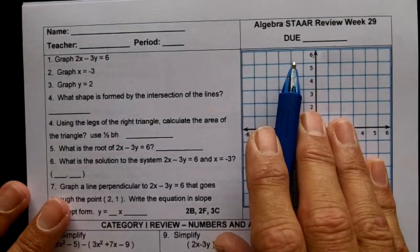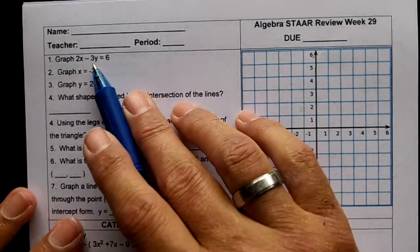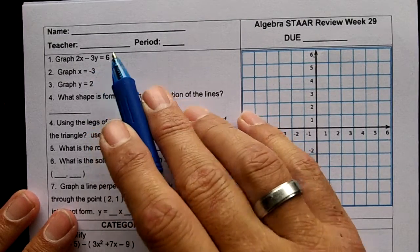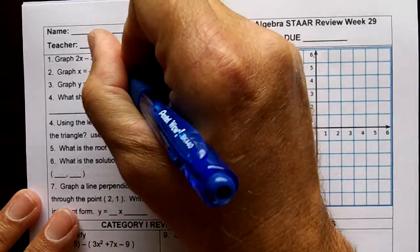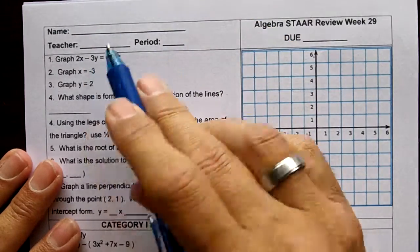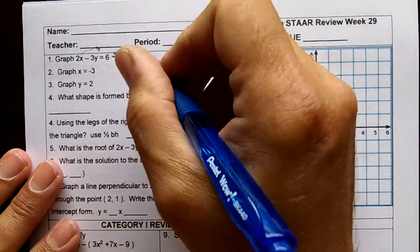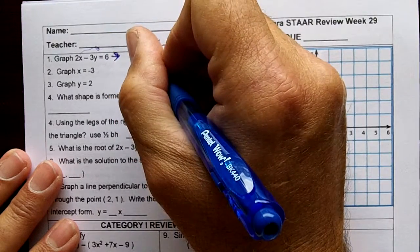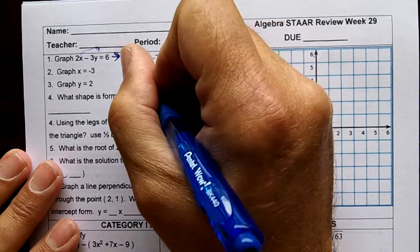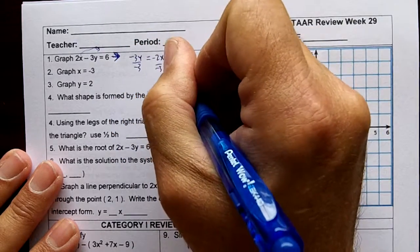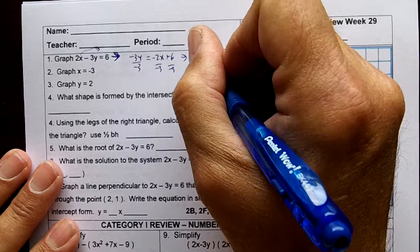STAAR review week 29, graph 2x minus 3y equals 6. To graph this we'll do it two ways. Let's make it y-intercept form. We'll move the 2x over, that'll make it negative 3y equals negative 2x plus 6. Then we'll divide everything by negative 3 and that will turn into y equals 2 over 3x minus 2.